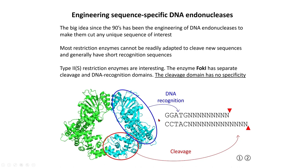The DNA recognition domain of FokI binds the sequence GGATG, and then the cleavage domain is separate. A key feature of type 2S restriction enzymes is they tend to bind in one place and cut a specific distance away — the sequence that they cut doesn't matter; they can cut all sequences there. Type 2S restriction enzymes are really useful in synthetic biology for lots of different techniques.